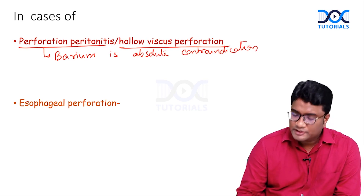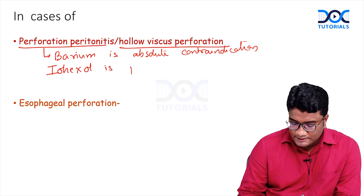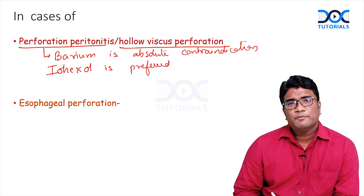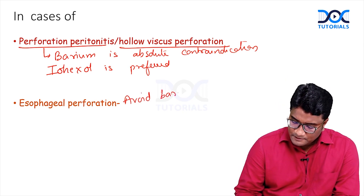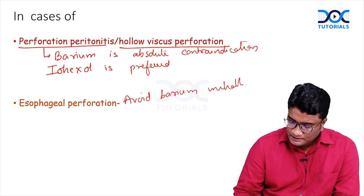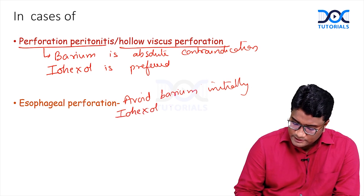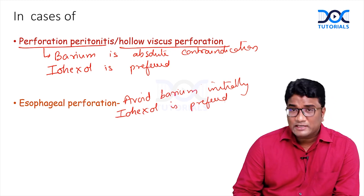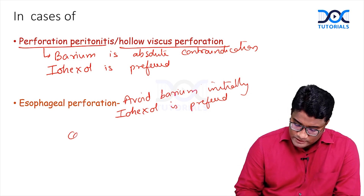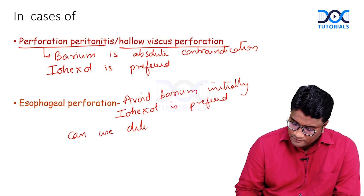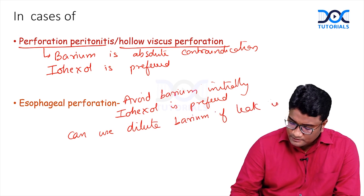The preferred agent in these cases is Iohexol, which is a water-soluble iodinated compound. In esophageal perforation, also avoid barium initially — Iohexol is preferred. If the leak is not demonstrated on Iohexol, you can then use a dilute form of barium.